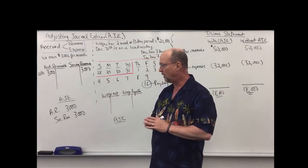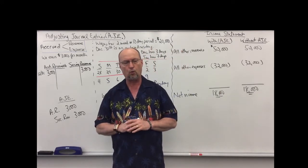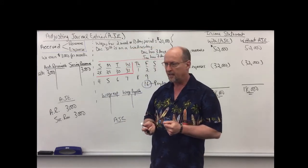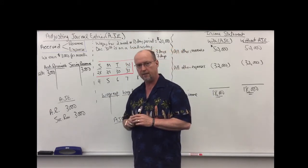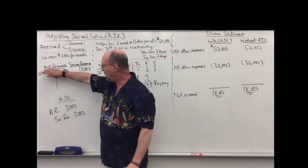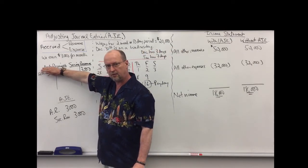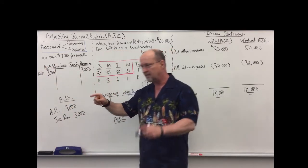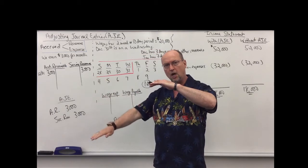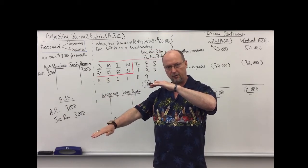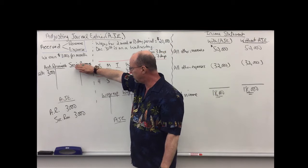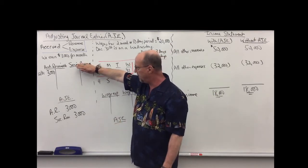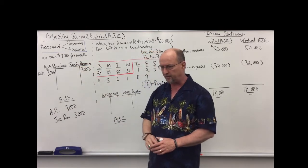Now let's think about what's the effect if we did not record this adjusting entry, because both the balance sheet and the income statement are affected. If I did not record this adjusting entry, I would think that accounts receivable had $3,000 less than it actually has. So assets would be understated or undervalued by $3,000. Same thing with service revenue — if I don't record this adjusting entry, revenue is undervalued by $3,000.